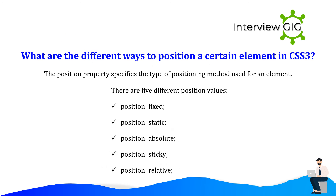What are the different ways to position an element in CSS3? The position property specifies the type of positioning method used for an element. There are five different position values: position: fixed; position: static; position: absolute; position: sticky; position: relative.